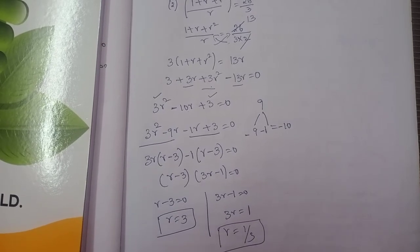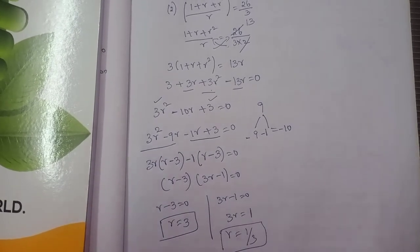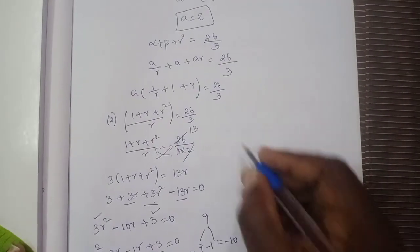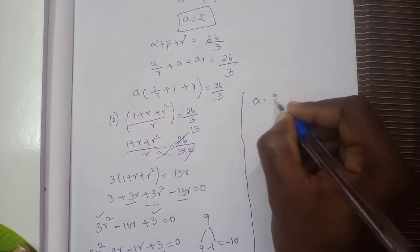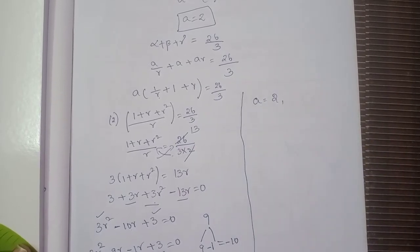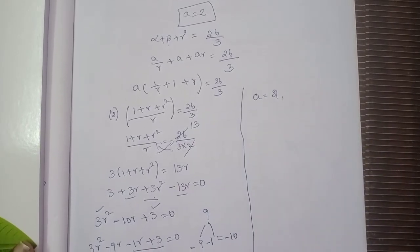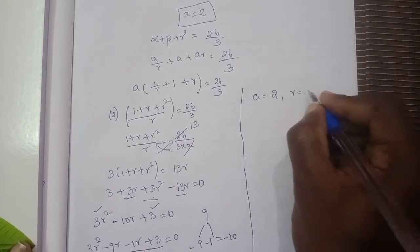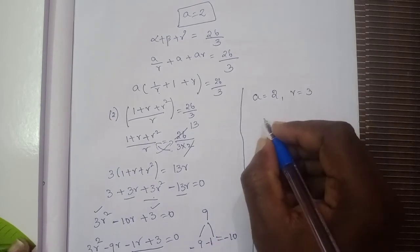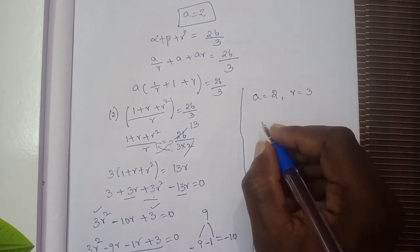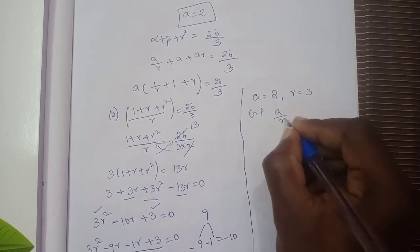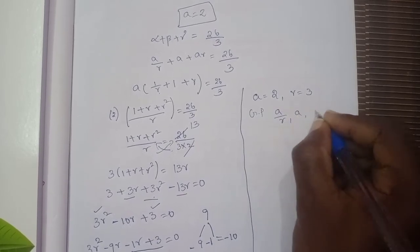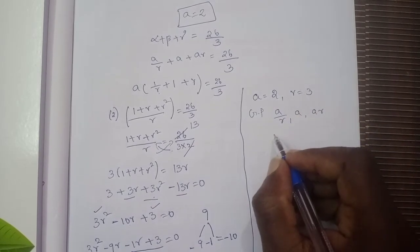So with a = 2 and r = 3 (or r = 1/3), the roots in geometric progression are a/r, a, ar.